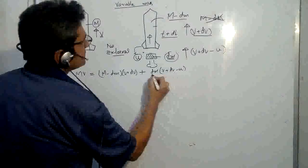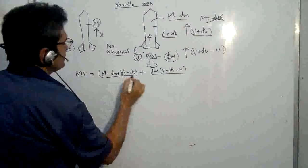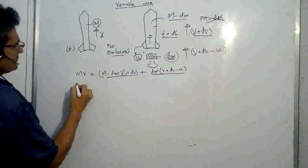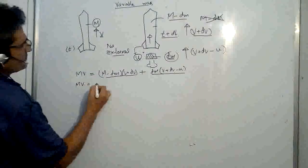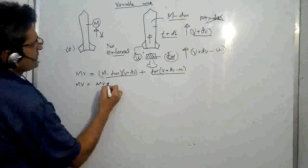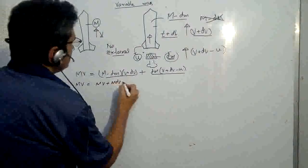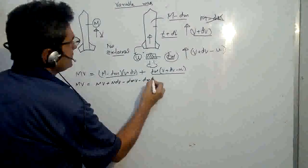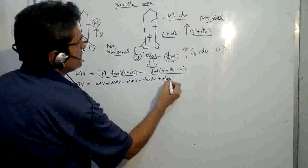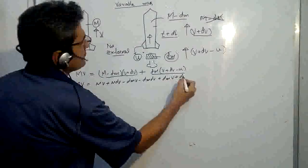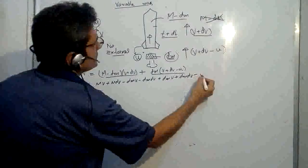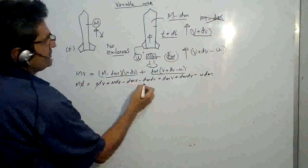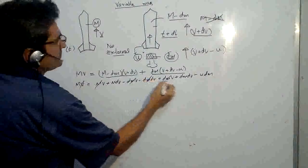So this is the momentum of exhaust, this momentum of rocket at time t plus dt, and this is at time t. We solve it. We get mv is equal to mv plus m dv plus dm dv minus dm dv plus dm v plus dm dv minus u dm. This gets cancelled, this gets cancelled, this gets cancelled.